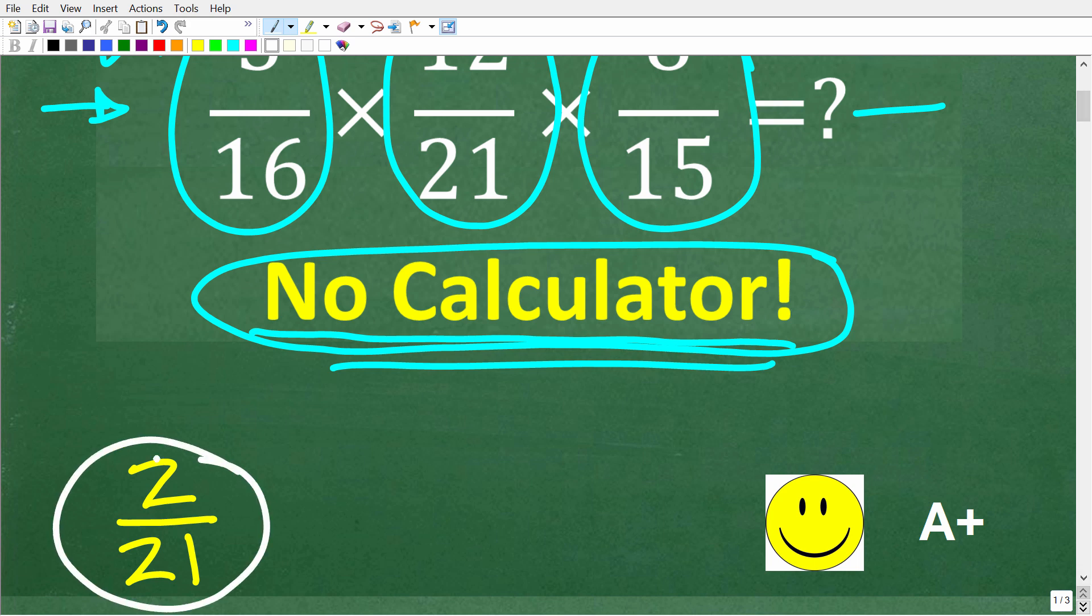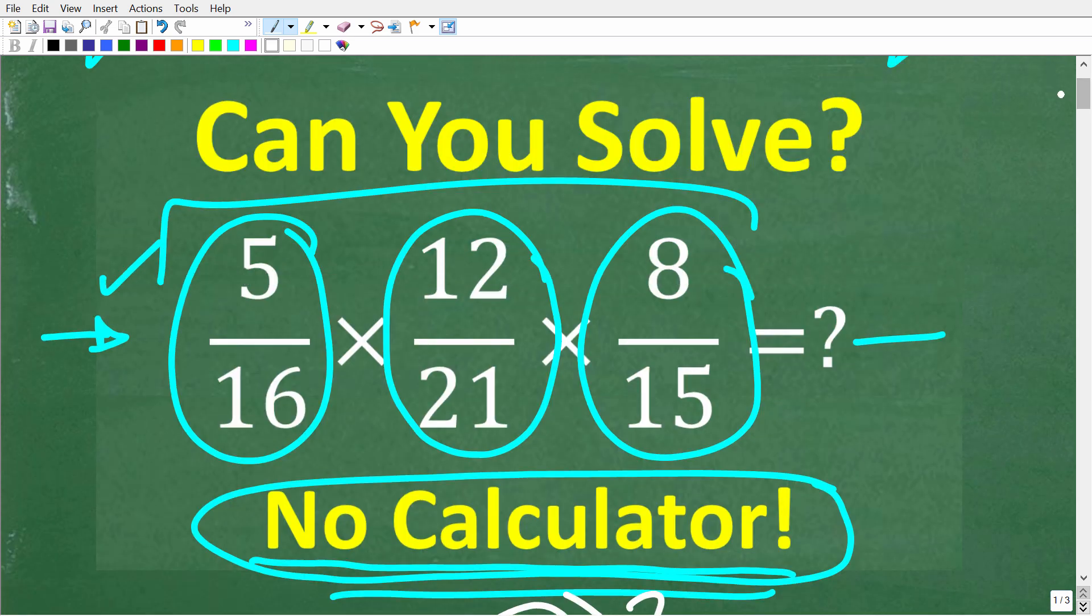Now if you got this right, well you definitely get a happy face and A plus. And if you're like, Mr. U2 math man, I'm totally lost, how do you do this? Well, we need to discuss something called cross-canceling like factors. This is very important, but the good news is it's not that difficult. So let's see how to do this right now.